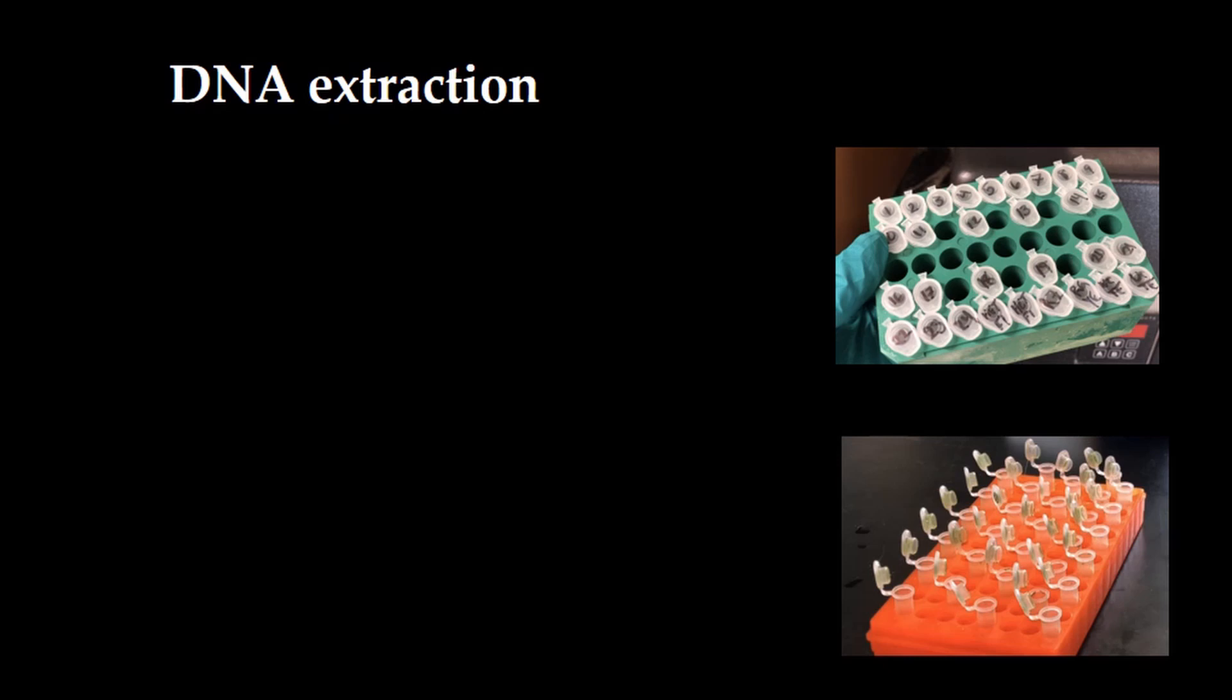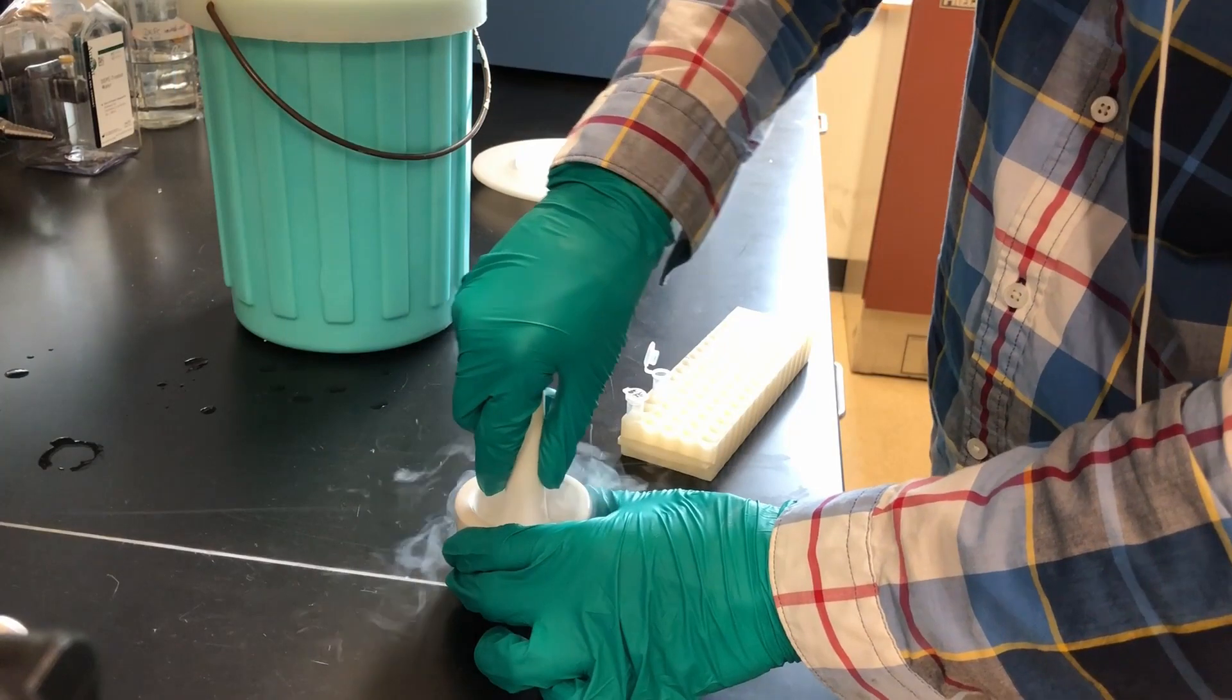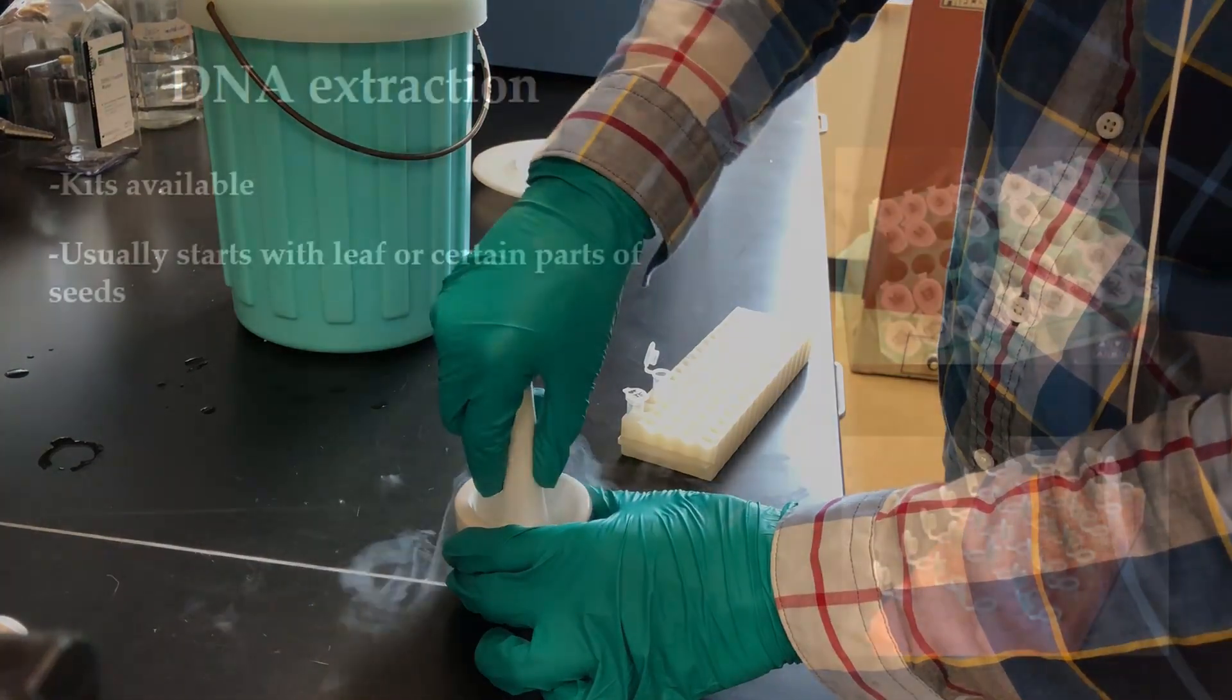Marker-assisted selection begins with DNA extraction. Like many steps in this video, kits are available to facilitate the process. DNA extraction starts by grinding leaves or certain parts of seeds. The ground tissue is suspended in an extraction buffer.